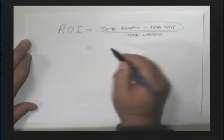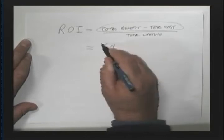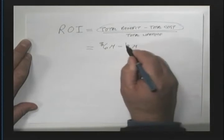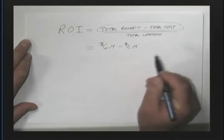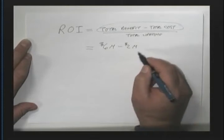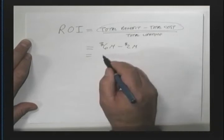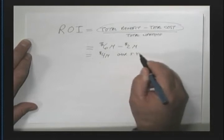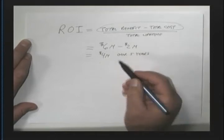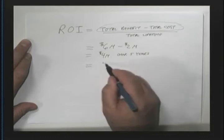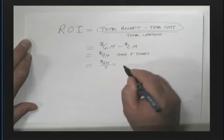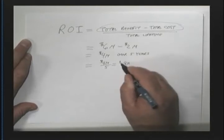So a couple of examples here. Let's say that the total lifetime benefit of an investment is $6 million and that the total lifetime cost of an investment is $2 million. We either state that as the ROI is $4 million over five years, or we will go ahead and divide that out and we will say that's $4 million divided by five which comes out to be $0.8 million per year.